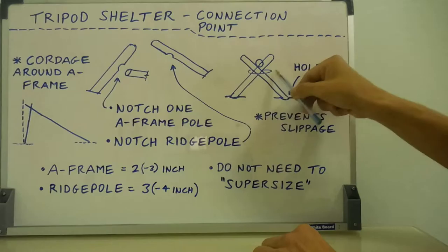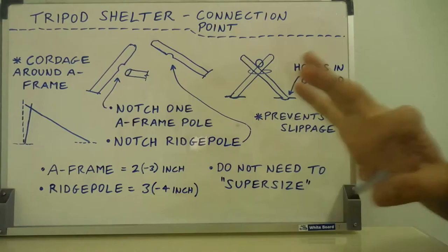You need cordage at least around the A-frame, not necessarily around the ridge pole. That's especially if your ridge pole is a thicker, heavier, longer pole.